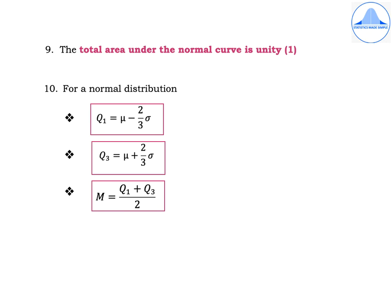Property 9: The total area under the normal curve is unity, that is 1. The area extends from minus infinity to infinity with center line x equal to mu. From the center line to infinity the area is 0.5, and from the center line to minus infinity the area is also 0.5, so the total area is 1.